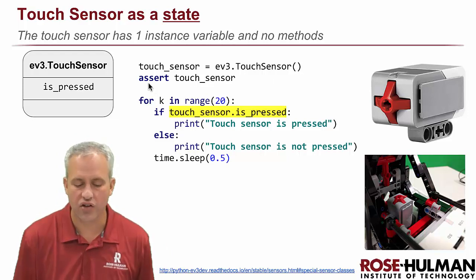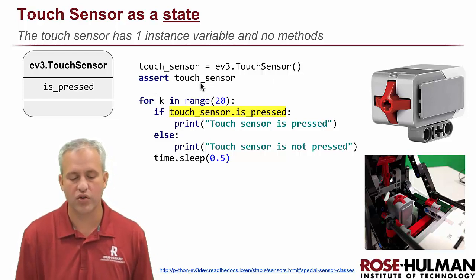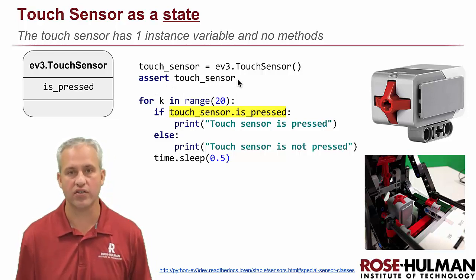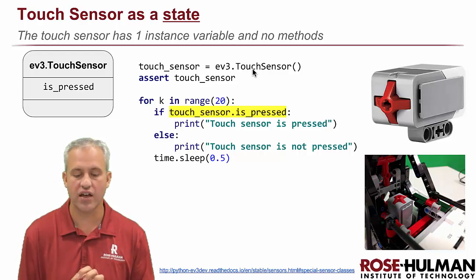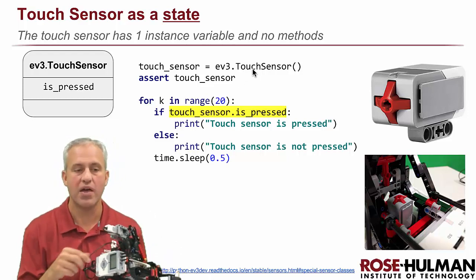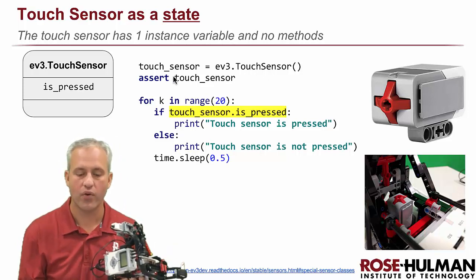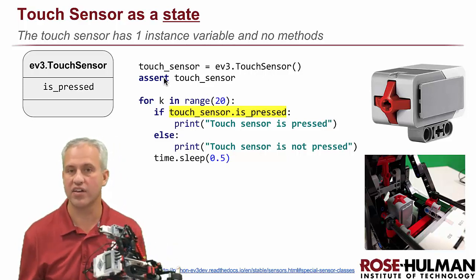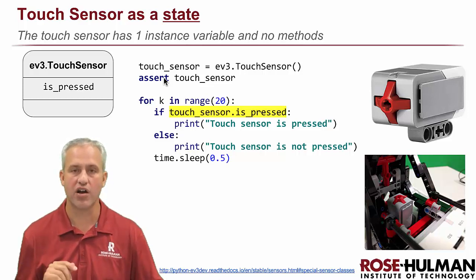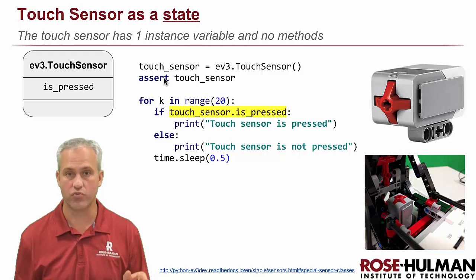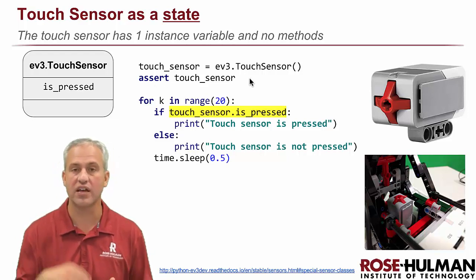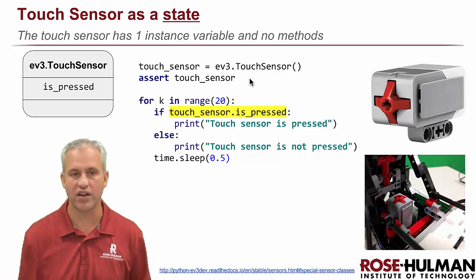This assert line — asserts say 'crash my code if anything's wrong.' There's a chance it won't find a touch sensor if somebody accidentally unplugged it. If it's accidentally unplugged, the assert will crash and say 'I didn't find any touch sensor,' and you actually want that — the program crashes right away and you know what's wrong. We use those asserts basically anytime we create an object, just to make sure it found it.